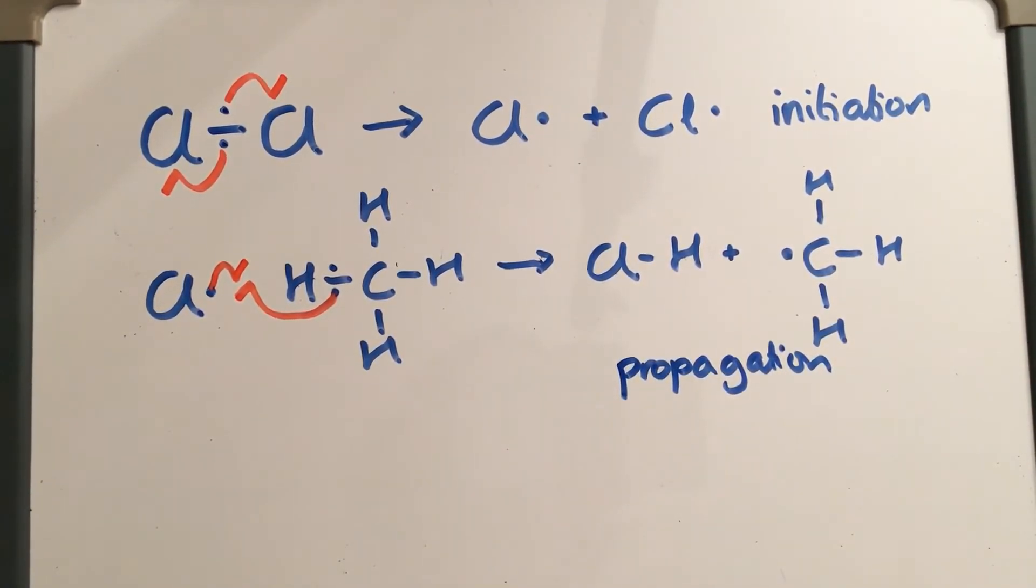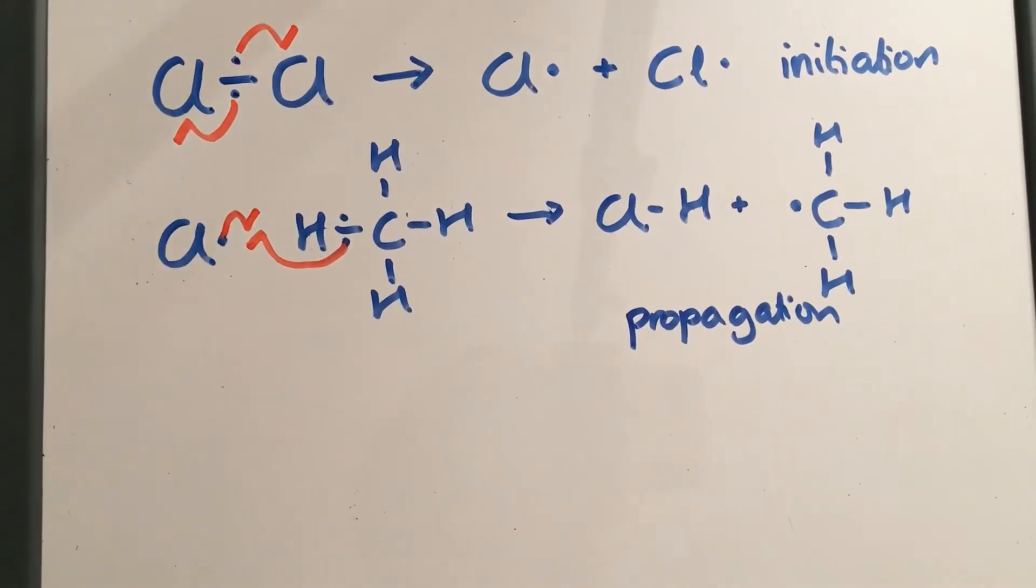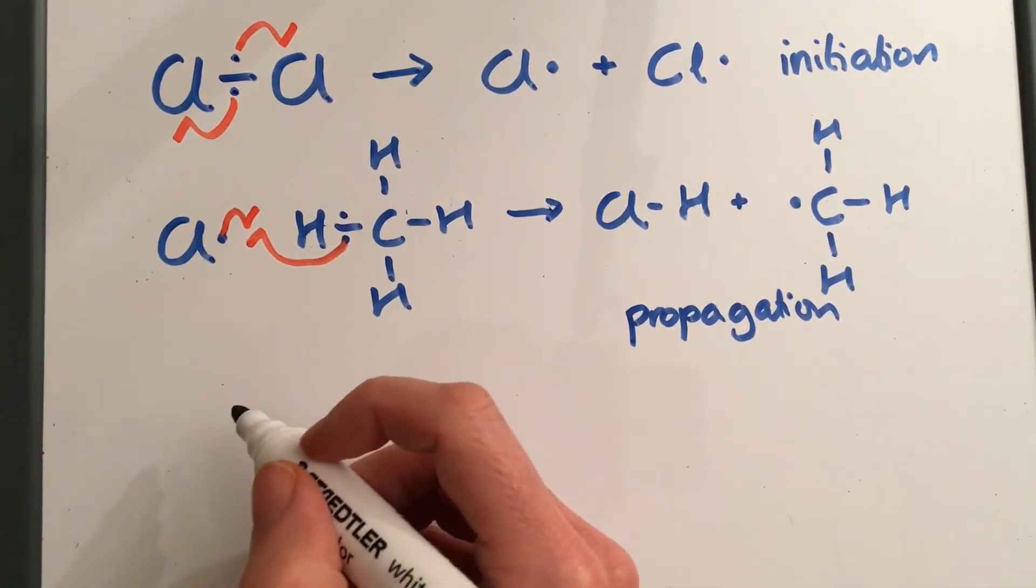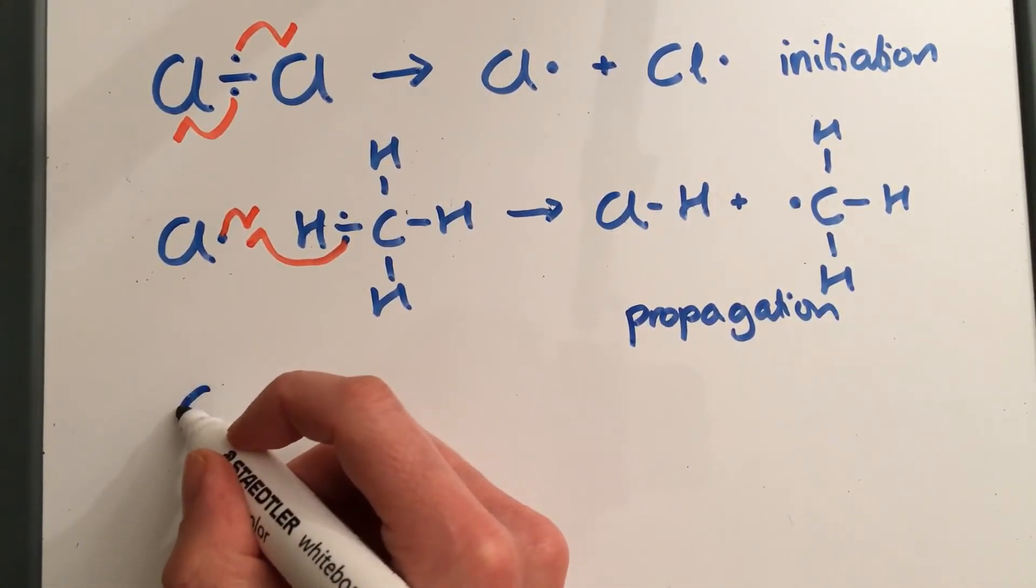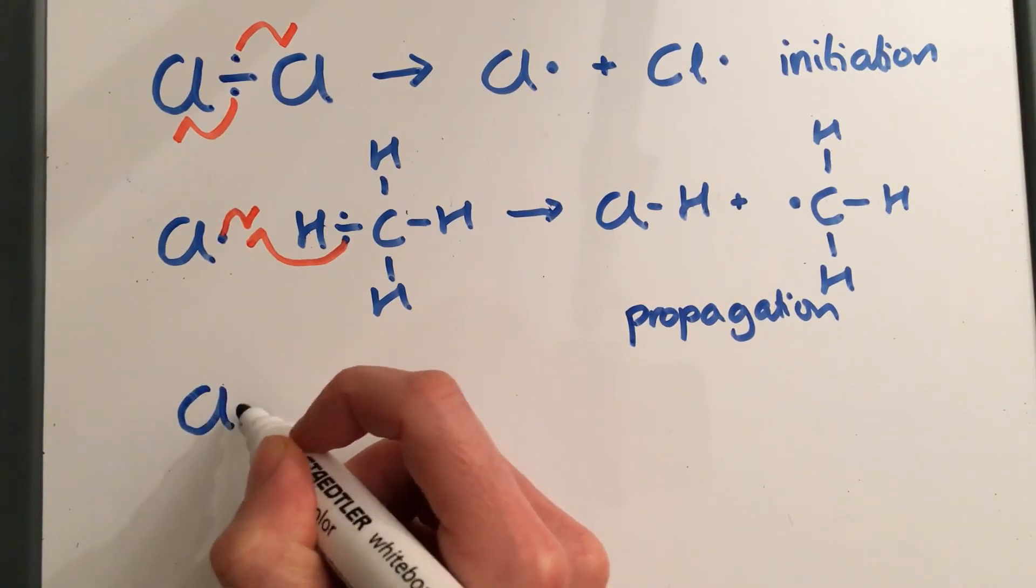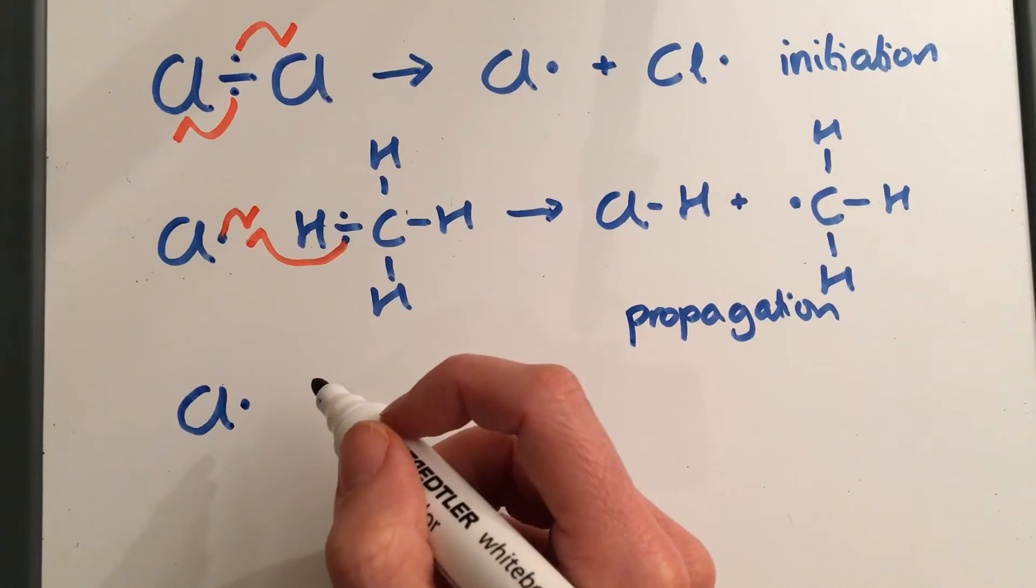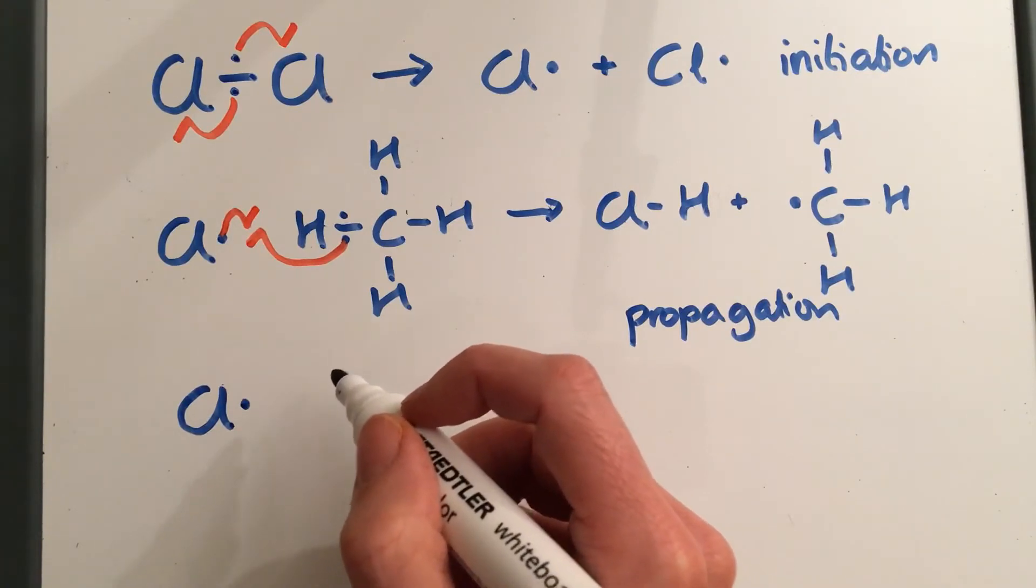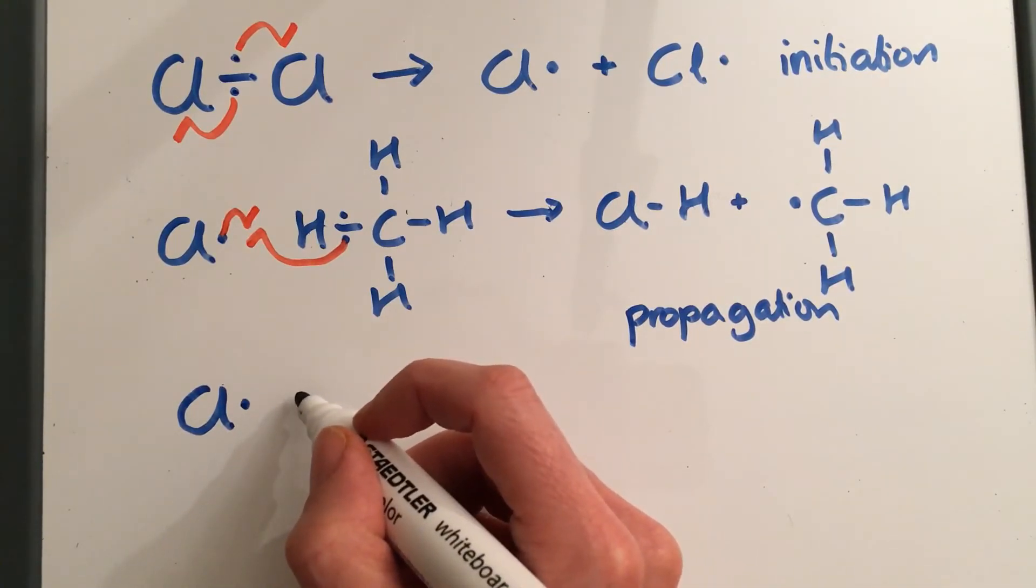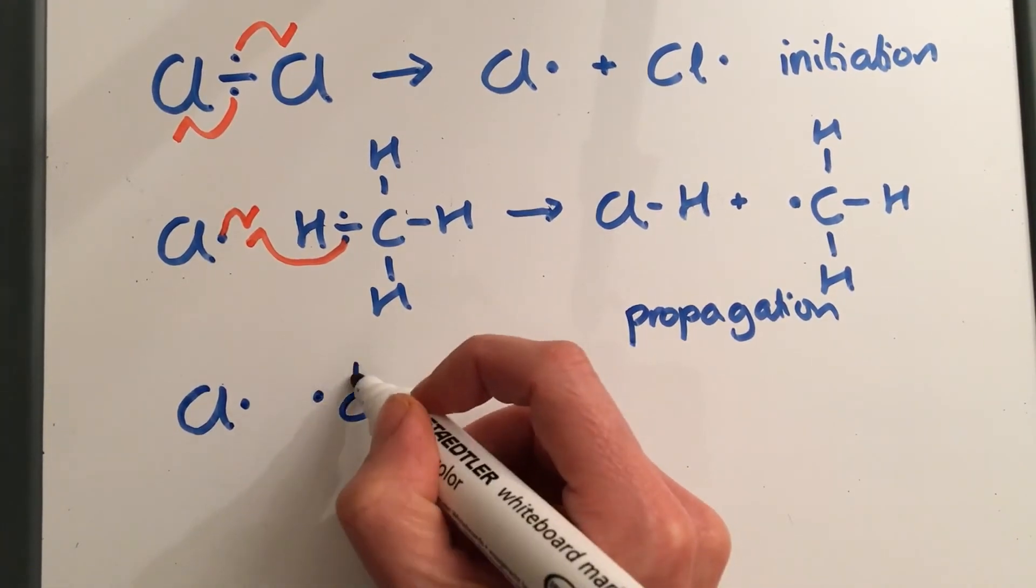And then, as you saw in the previous video, there are lots of different ways that this reaction could finish or terminate. So one example of this is there could be another chlorine radical that could react with the methyl radical.